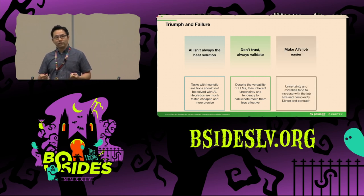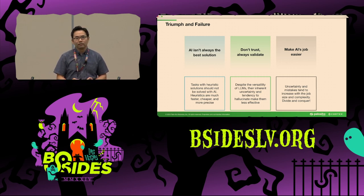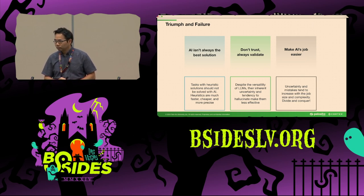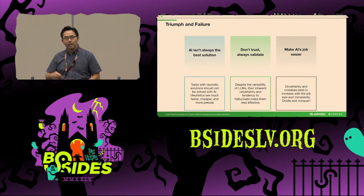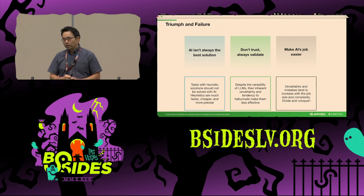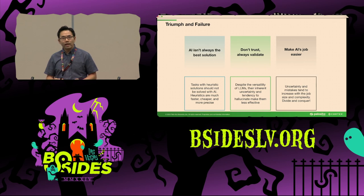Third: make AI's job easier. Treat AI like a very capable junior colleague who can do simple tasks extremely well but starts making mistakes as tasks get more complex. It is the human supervisor's responsibility to simplify AI's task. In our case, giving the entire API spec of thousands of lines to AI confused it a lot. So we break each API spec into many smaller pieces and only feed AI the relevant pieces for the current task. When working with AI, divide and conquer is always a good strategy.